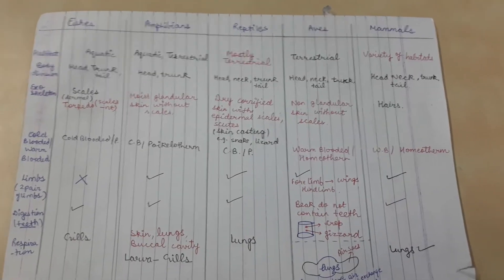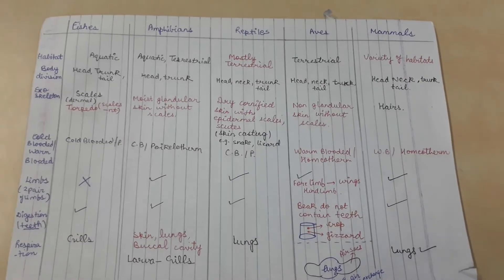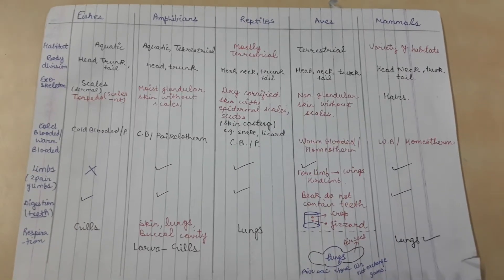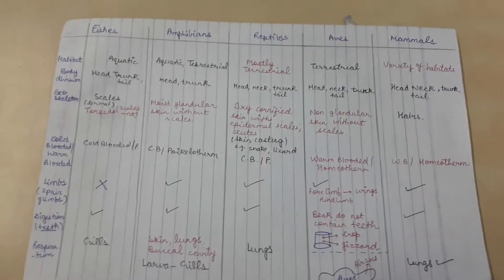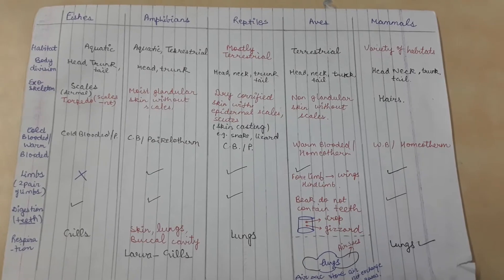First, habitat. As we know, fishes are found in aquatic habitat, amphibians are aquatic or terrestrial. The most common example is the frog. Then we have reptiles which are mostly terrestrial, aves which are terrestrial.